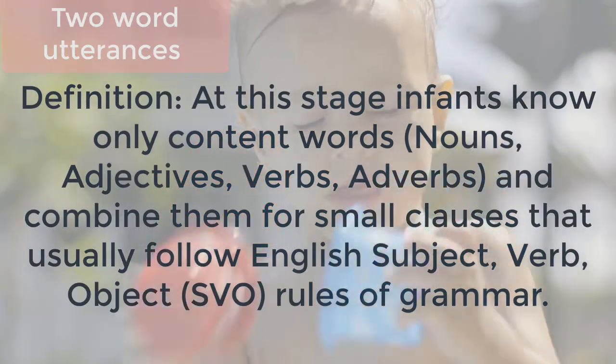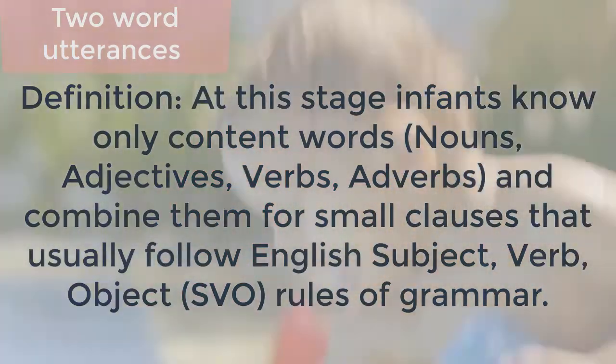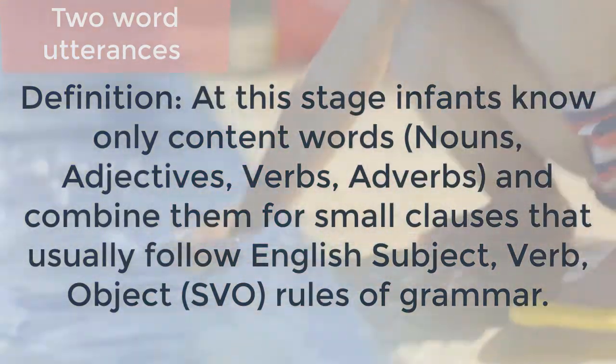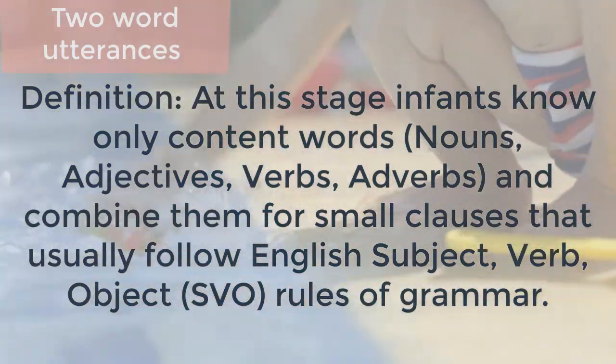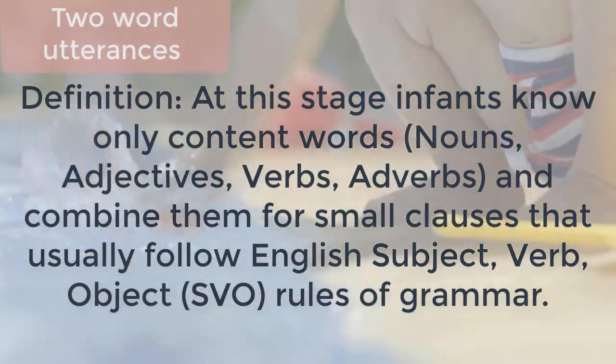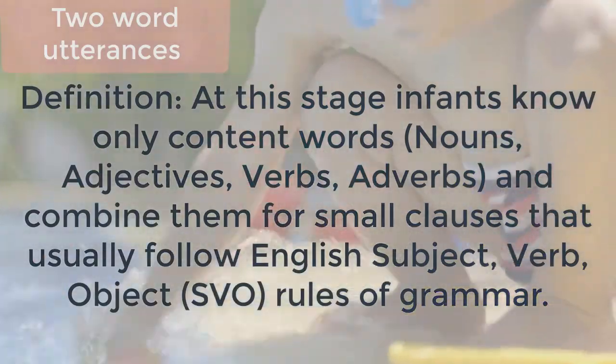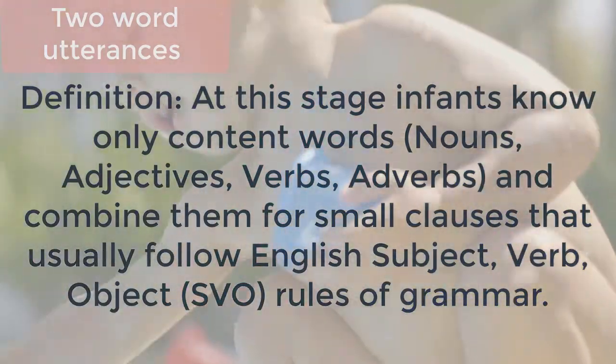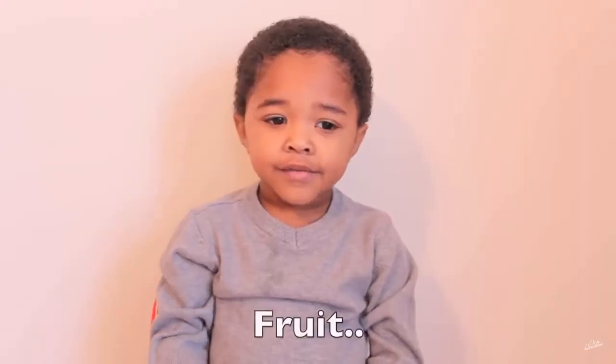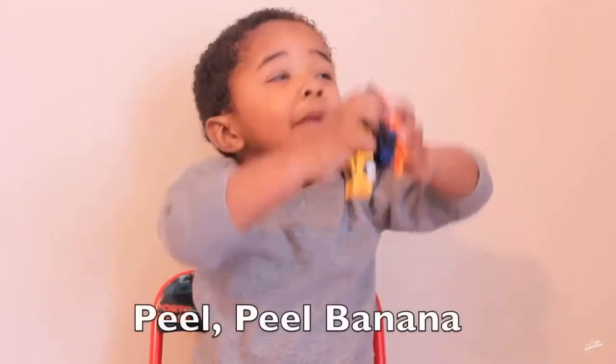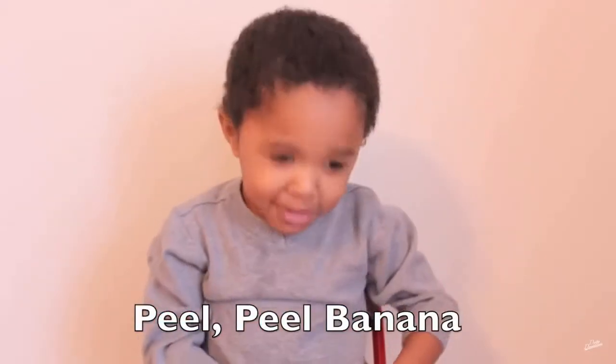At the two-word utterance stage, children can make short combinations of content words to get their point across — for example: pull, no.